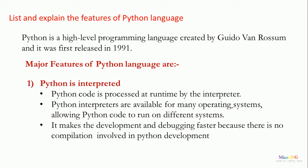The first one, Python is interpreted. Python code is processed at runtime by the interpreter. Python interpreters are available for many operating systems allowing Python code to run on different systems. It makes the development and debugging faster because there is no compilation involved in Python development.